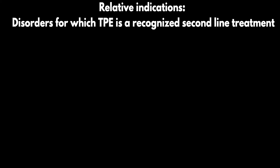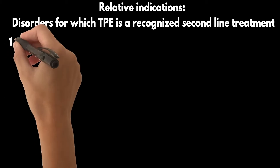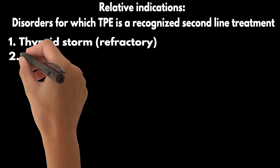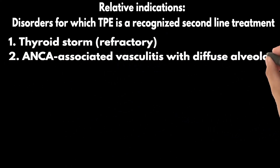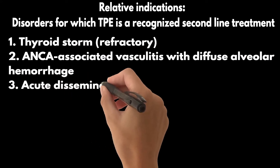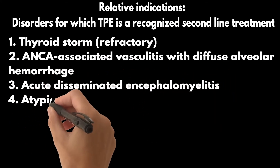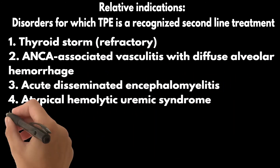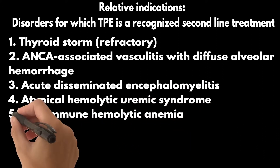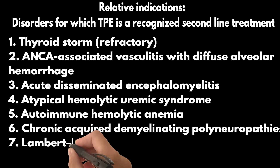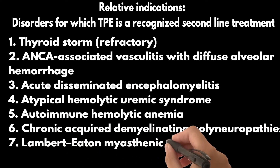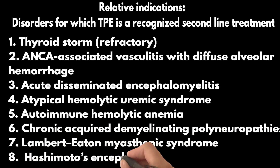Disorders for which TPE is recognized as a second-line treatment, alone or in combination, are: refractory thyroid storm, ANCA-associated vasculitis with diffuse alveolar hemorrhage, acute disseminated encephalomyelitis, atypical hemolytic uremic syndrome, autoimmune hemolytic anemia, chronic acquired demyelinating polyneuropathies, Lambert-Eaton myasthenic syndrome, and Hashimoto's encephalopathy.